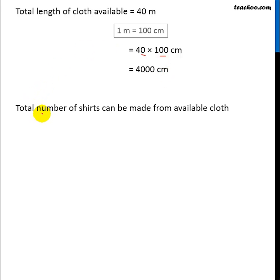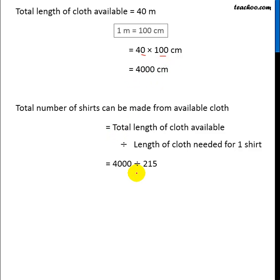Now total number of shirts which can be made is total length of cloth divided by length of cloth required for one shirt. Total length of cloth is 4000 and length of cloth required for one shirt is 215. So we need to divide 4000 by 215. Let's divide them.